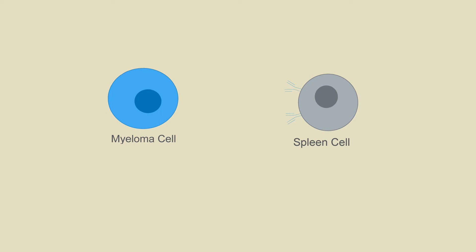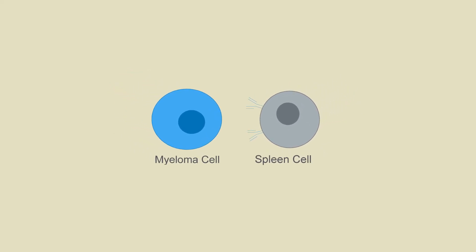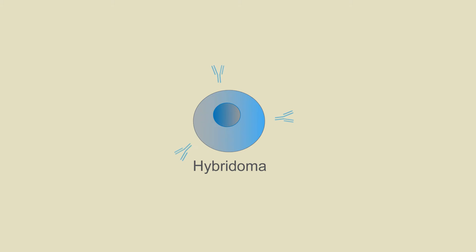Hybridomas are a specialized cell line created in vitro by the fusion of myeloma and spleen cells for the purpose of producing antibodies.